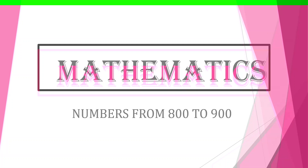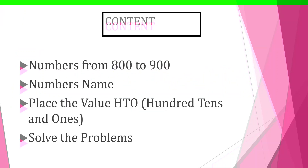Hello friends. Today we are learning about the subject of mathematics, in the topic of numbers from 800 to 900. Here in this slide you can see the contents. There are subcontents of the numbers from 800 to 900. Second point: number names. Third is the place value of HTO — hundreds, tens, and ones — and some problems to solve in the numbers from 800 to 900.